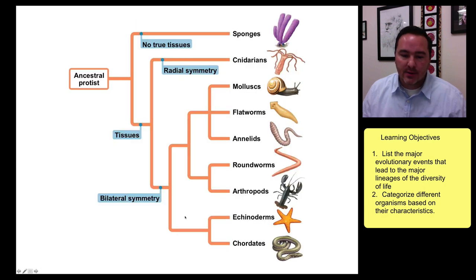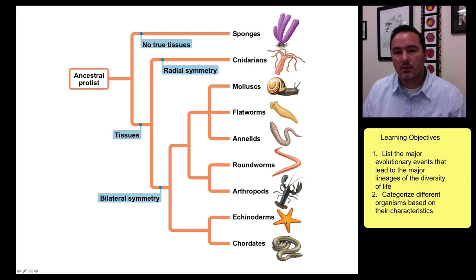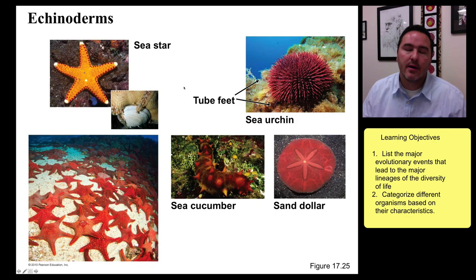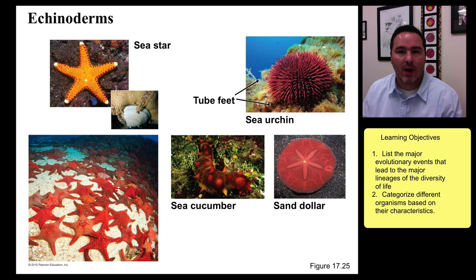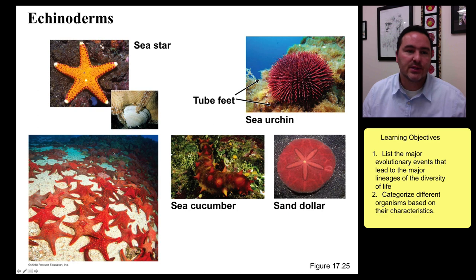Then we come to the next major lineage of bilaterally symmetrical animals: the echinoderms. You might say that doesn't look bilaterally symmetrical — it looks more like radial symmetry. But echinoderms in their larval forms actually have right and left halves, and then develop a more radial symmetry as adults. This group includes sea urchins, sand dollars, sea cucumbers, and sea stars.